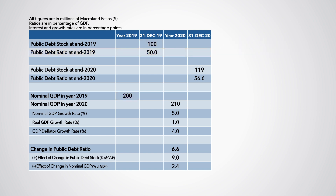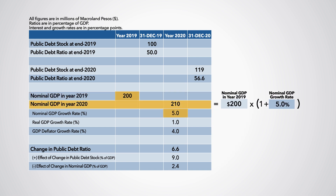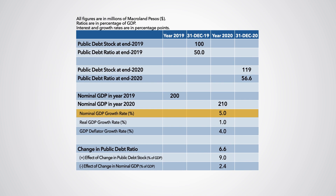Nominal GDP increased from 200 million Macroland pesos in 2019 to 210 million in 2020. Thus, the nominal GDP growth rate is 5%, of which 1% is the real GDP growth rate and 4% is the GDP deflator growth.